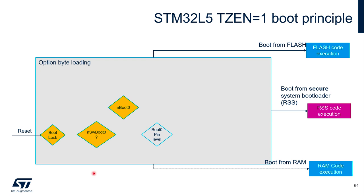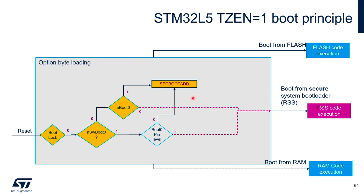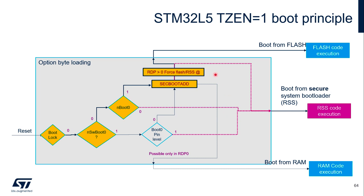When TrustZone is enabled on L5 and boot lock is not yet activated, the nSoftware_Boot0 option bit will decide whether to take the configuration from the boot0 pin or the boot0 option. Both could lead to booting from RSS directly or to use the address from the secure boot address option byte, which can be programmed with an address from user flash, RSS, or internal SRAM. However, an address in SRAM is only allowed when RDP is set to level 0. When RDP is higher than level 0, the valid address in the secure boot address option byte can only be from user flash or RSS.